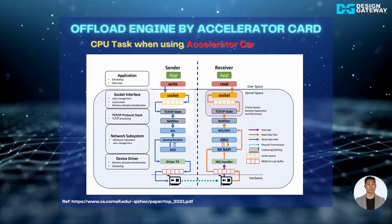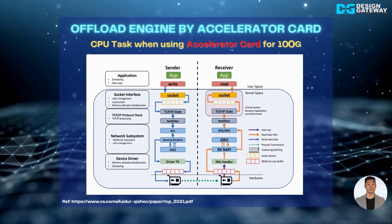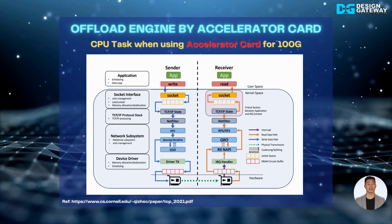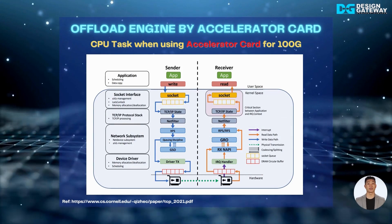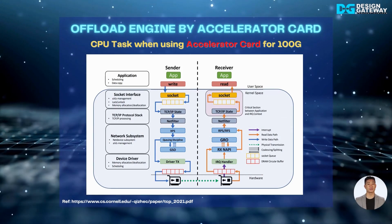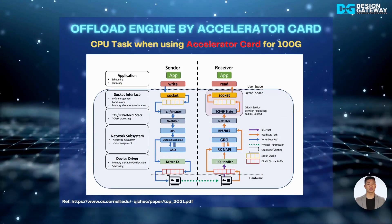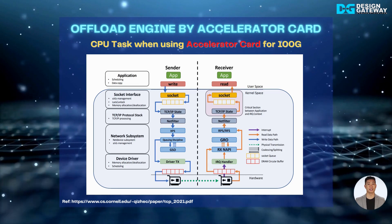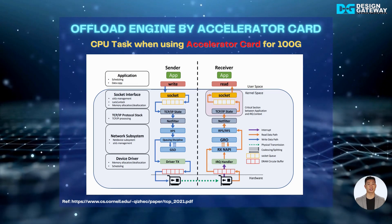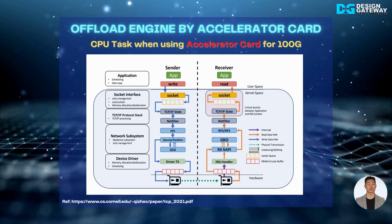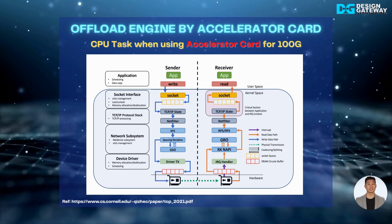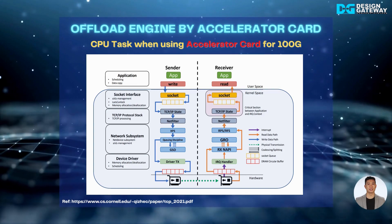From the CPU bottleneck, the complete CPU offload engine, implemented by an accelerator card, is proposed. Most CPU tasks for handling TCP/IP packets are handled by the TOE100G IP and LVO accelerator card instead.